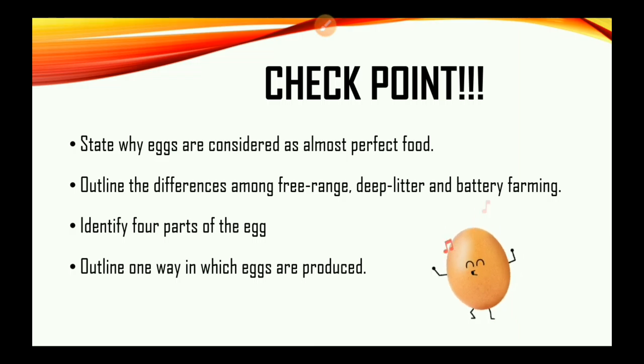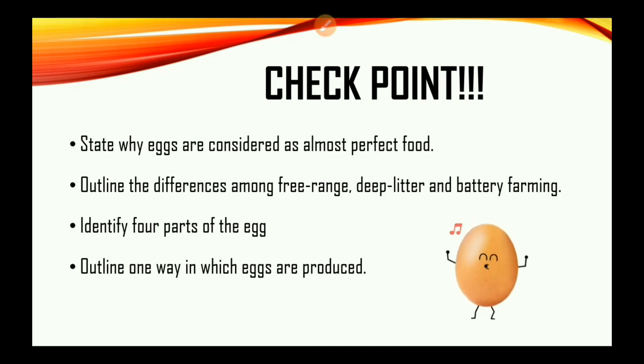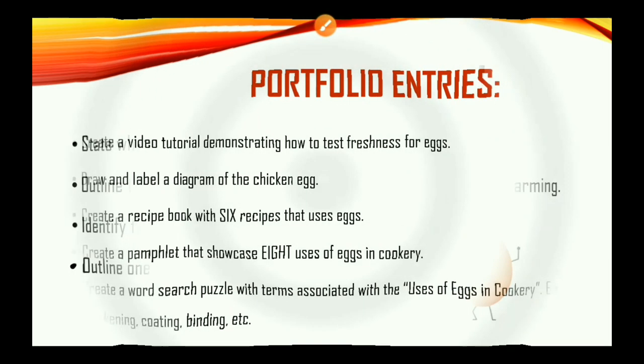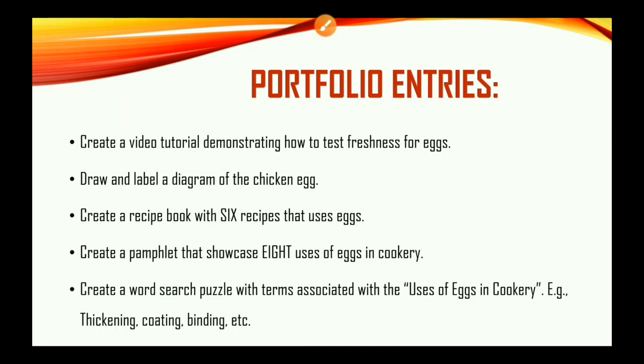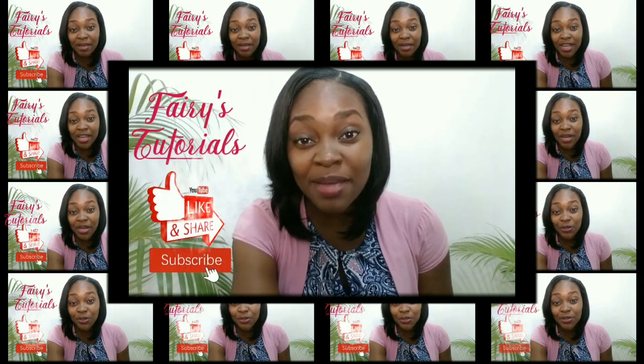Checkpoints: State why eggs are considered as almost perfect food. Outline the differences among free-range, deep litter and battery farming. Identify four parts of the egg and outline one way in which eggs are produced. As a bonus, take a look at the video. You've made it to the end — don't forget to subscribe, like, comment, and share with persons who you know will find this video useful. Thank you for watching.